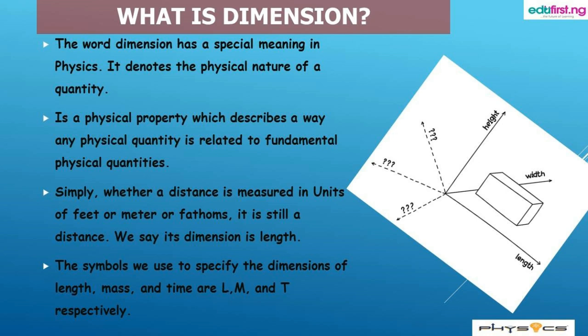Anytime we're talking about dimension of distance, we are referring to length. The symbols used to specify the dimensions of length, mass, and time are L, M, and T respectively.